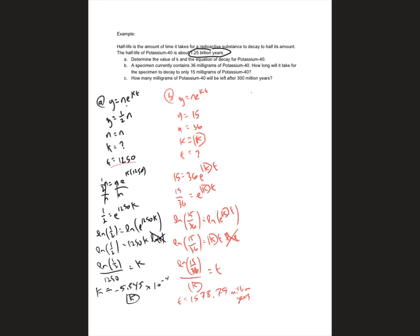Now, for part c, how many milligrams will be left after 300 million years? So this time, same formula. It's the same isotope. So we're going to be using the same k.